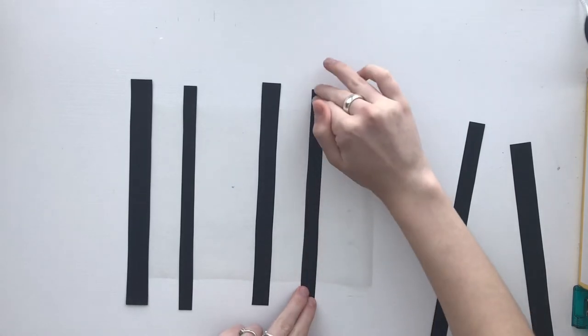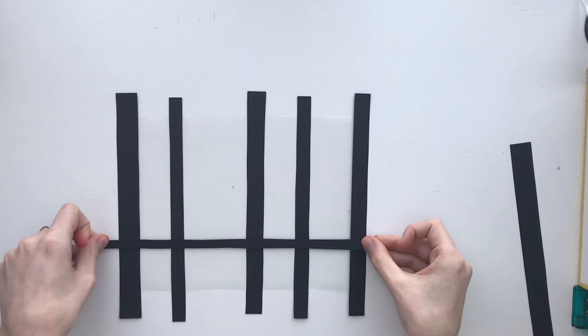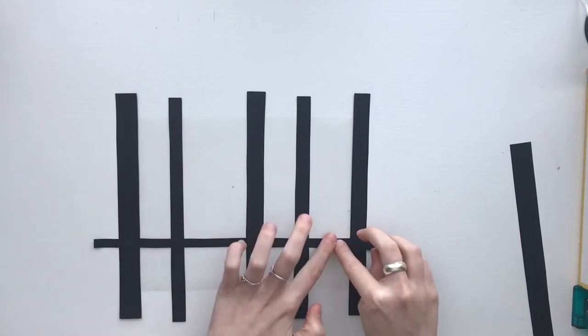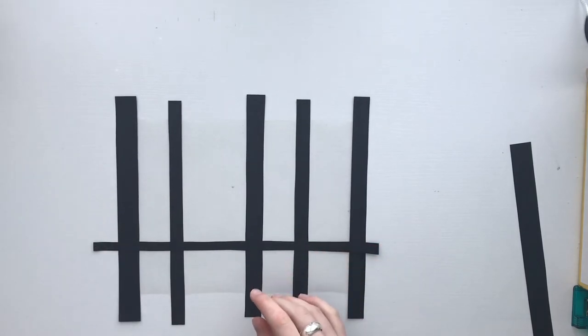Then, after this, you will take the longer strips of cardstock and lay them horizontally over the other strips. Make sure that these strips are stuck to the contact paper, since they are laying on top of other strips.